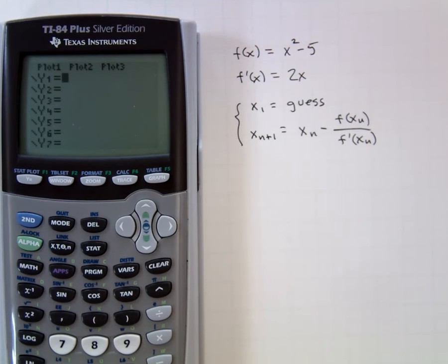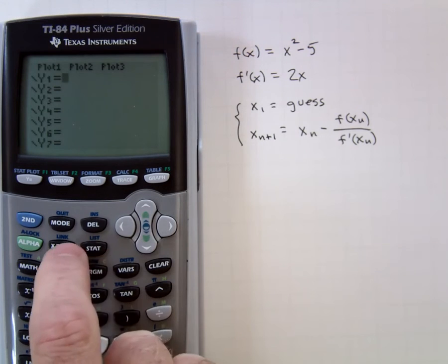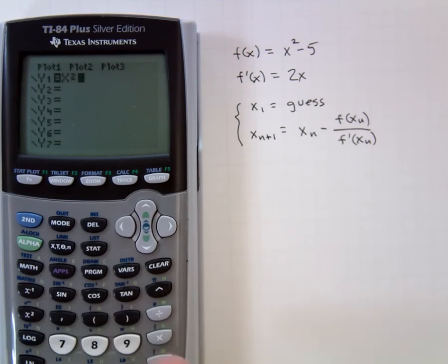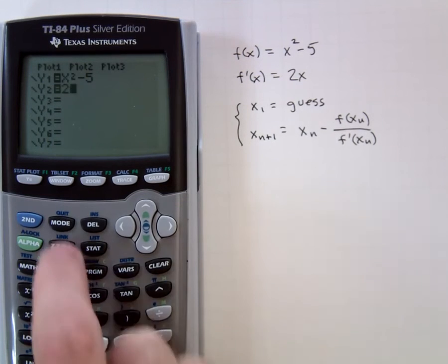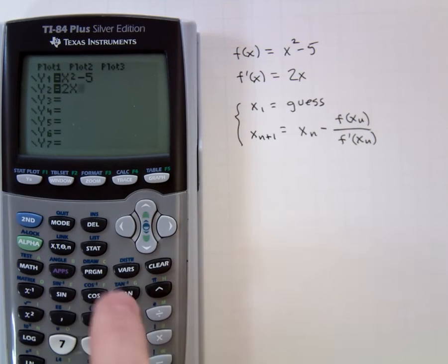We'll enter in y1 of the calculator x² - 5, the function whose zeros we're trying to find, and its derivative will go in y2, which is 2x.